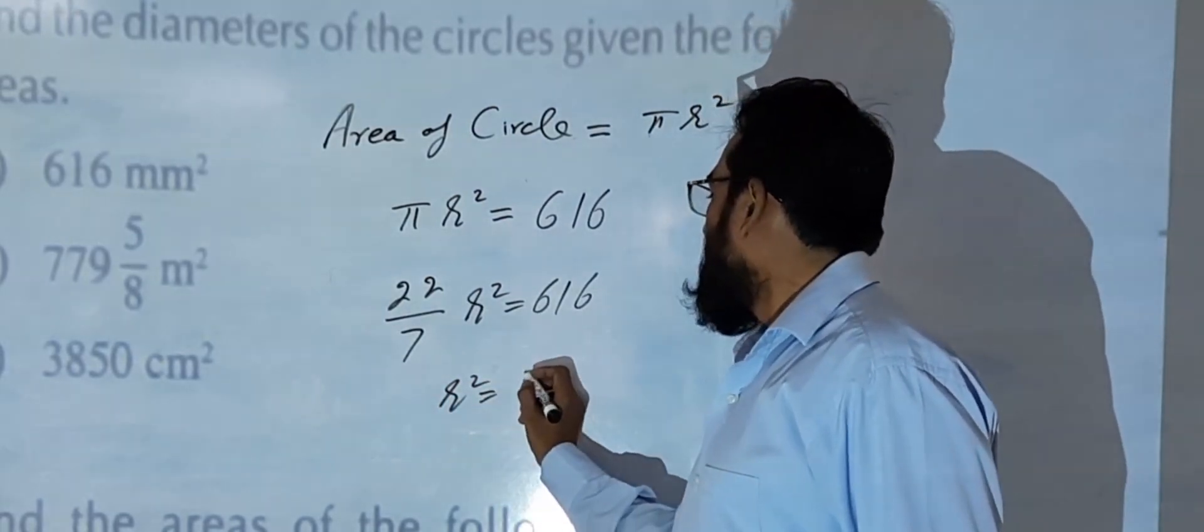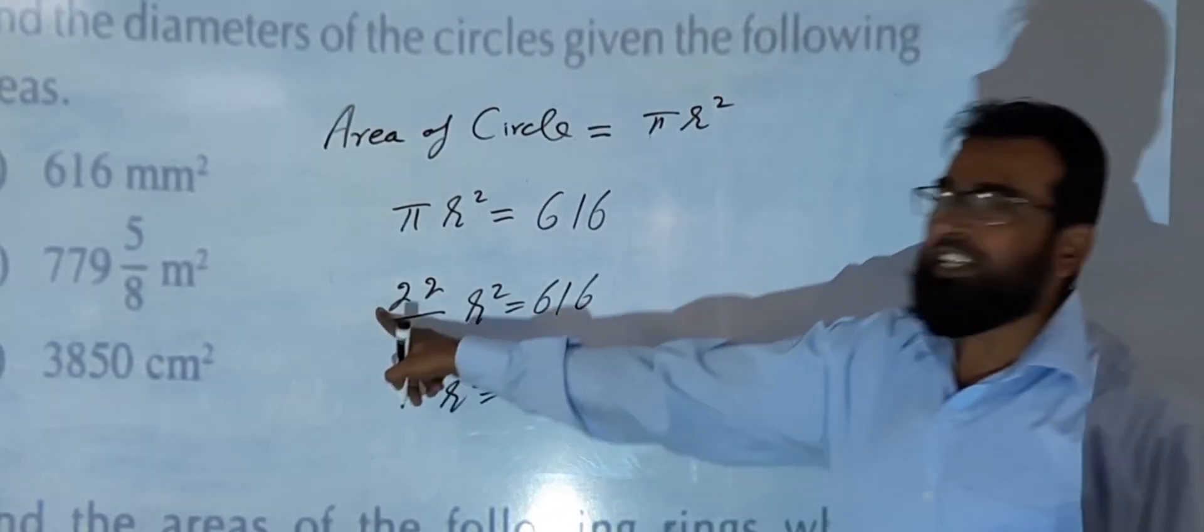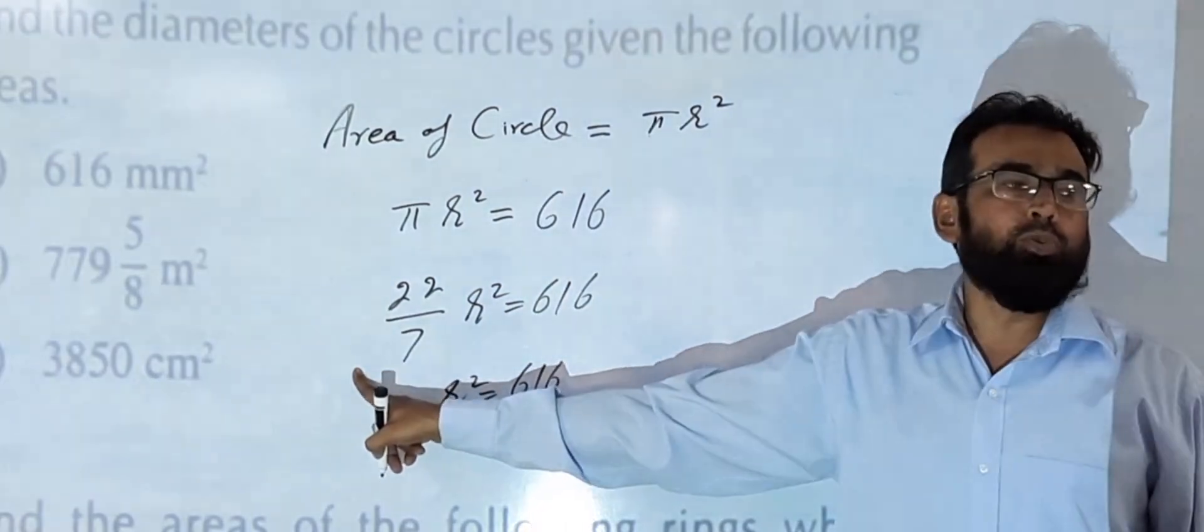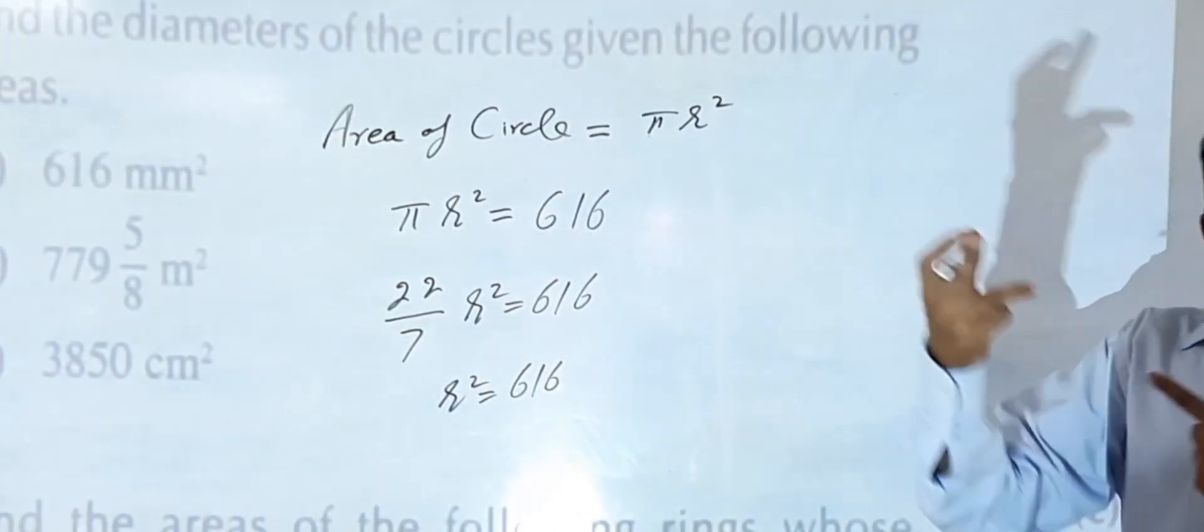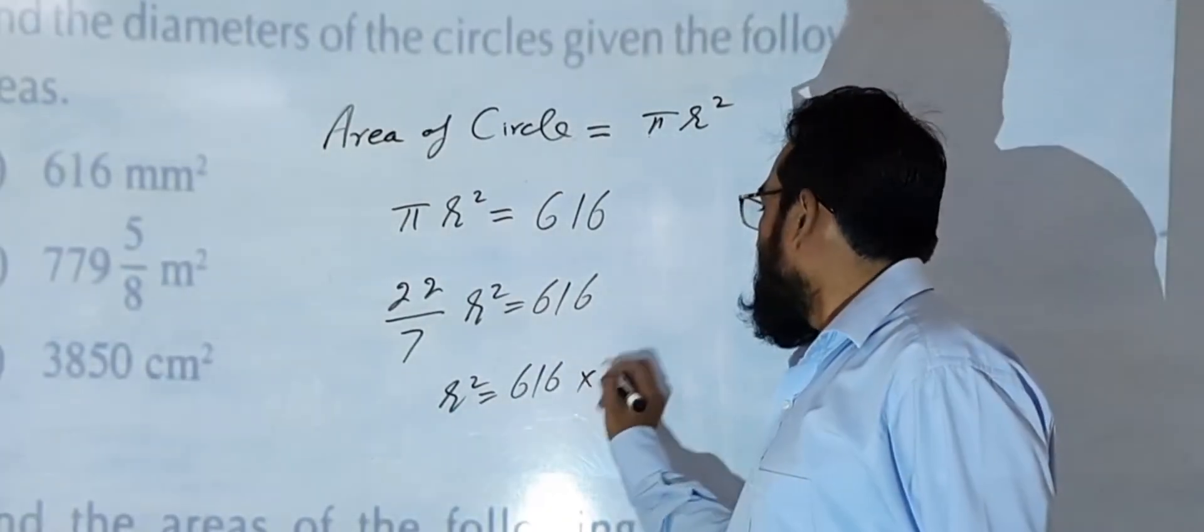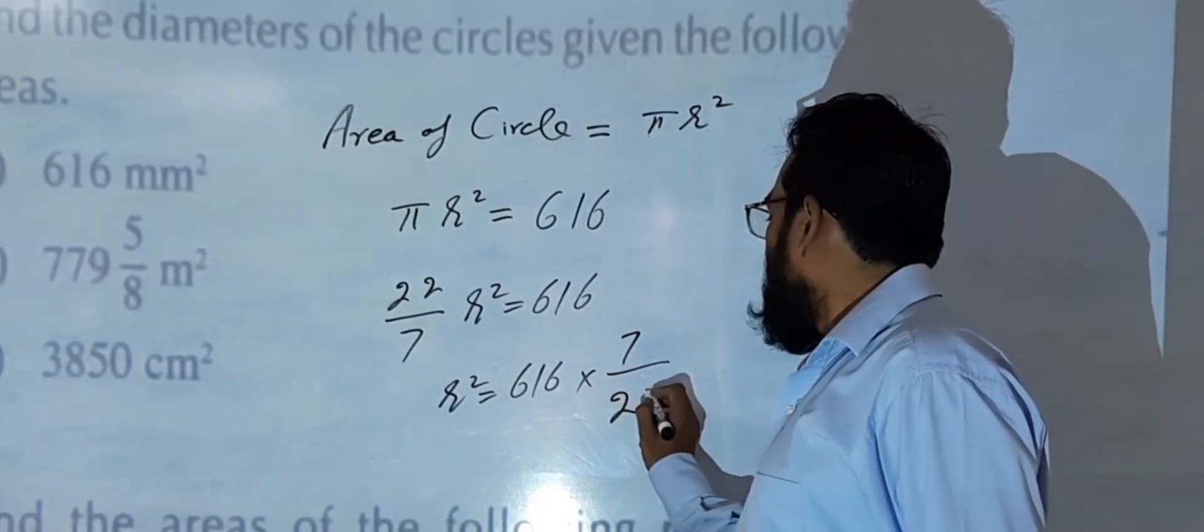And r² is equal to 616. When this 22/7 will go to the other side, it will be shifting like 7/22.